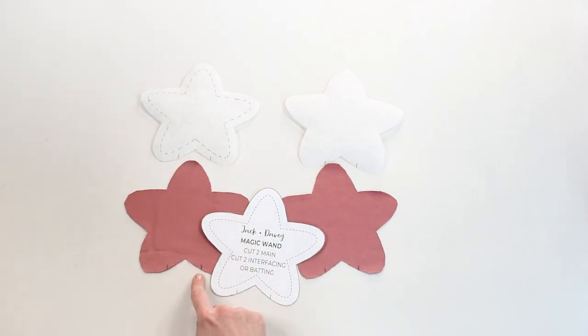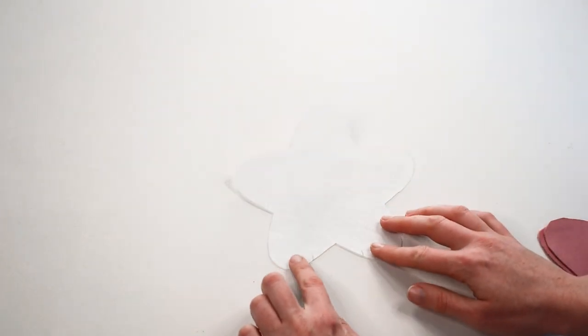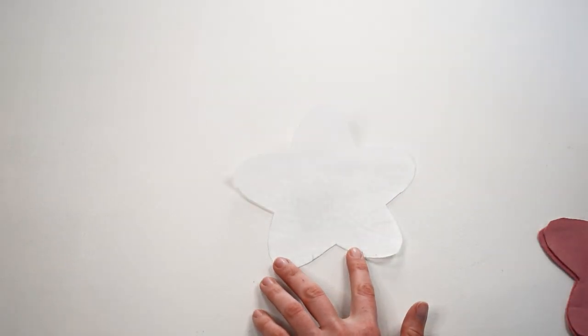Do not iron your interfacing onto your star just yet. Place your fabrics in the following order to make sure the side with the notch lines is all together. I like to keep these on the bottom. Put the interfacing with the glue side facing up if it has glue, the main star with the right side facing up.